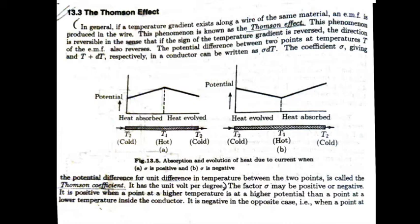If a current I ampere flows in the direction of the positive temperature gradient for T second and if sigma is positive, then energy I into T into sigma into DT joule is absorbed. And if the current flows in the direction of negative temperature gradient, the same amount of heat will be evolved.